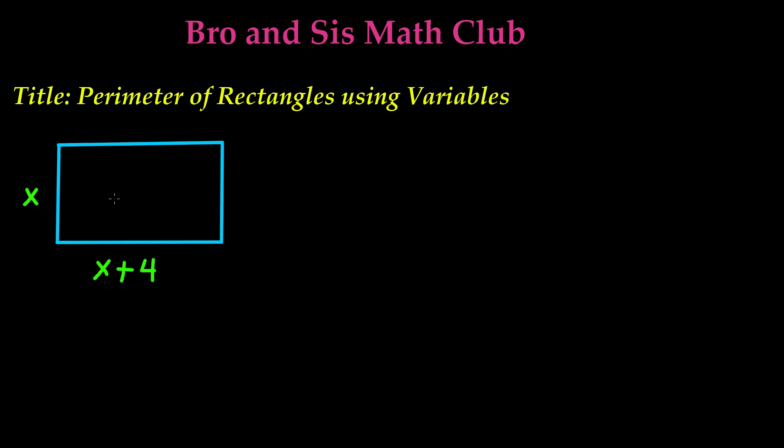First, it's important to know all the measurements of each of the sides. We have been given two measurements here. And we know that in a rectangle, there are two pairs of parallel lines, and both of these are of the same measurement. So these two lines are of the same measurement, and these two lines are of the same measurement.